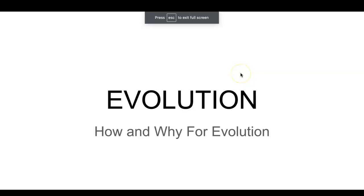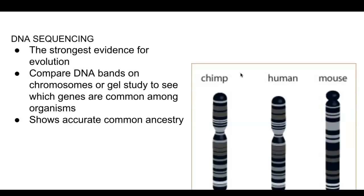Welcome, biology students. We're going to take a look at evolution — the how and why for evolution — taking a look at some pieces of evidence. One piece of evidence towards evolution is DNA sequencing. Since the discovery of the DNA molecule in the 1950s, this area of biology has really expanded. With that expansion of knowledge and new disciplines within biology, we now use DNA sequencing as the strongest evidence for evolution.